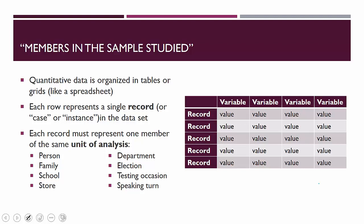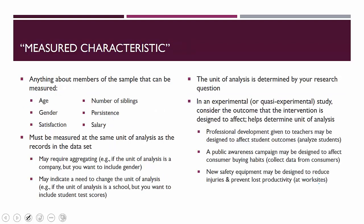Each record must represent one member of the same unit of analysis. So if the unit of analysis is people, then each row represents a person. If the unit of analysis is a testing occasion or a speaking turn in a conversation, then each row represents that same unit. That takes us to the variables that are measured characteristics of that thing. If we're talking about people, we might record their age, gender, satisfaction, number of siblings, degree to which they persist in things, or maybe their salary.